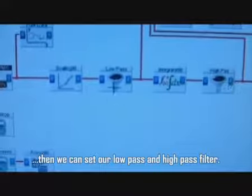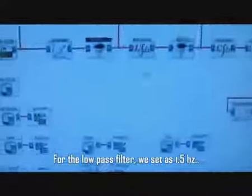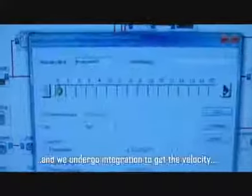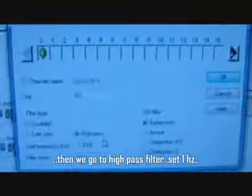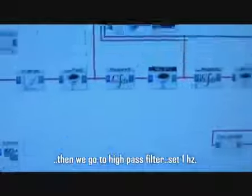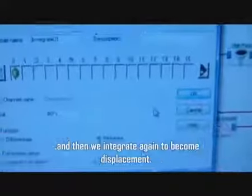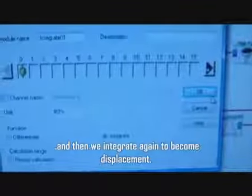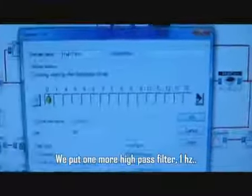Then we can set our low pass and high pass filter. For the low pass filter we set as 1.5 Hz and we undergo integration to get velocity. Then we go to high pass filter 1 Hz, and then we integrate again to become displacement. We put one more high pass filter 1 Hz.